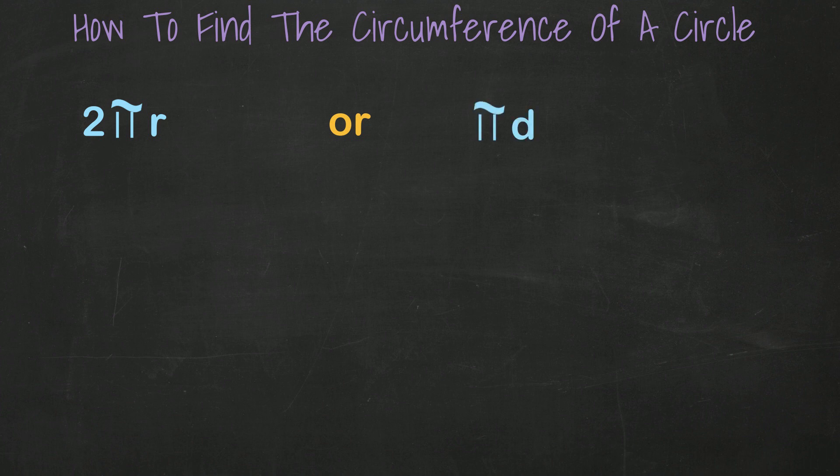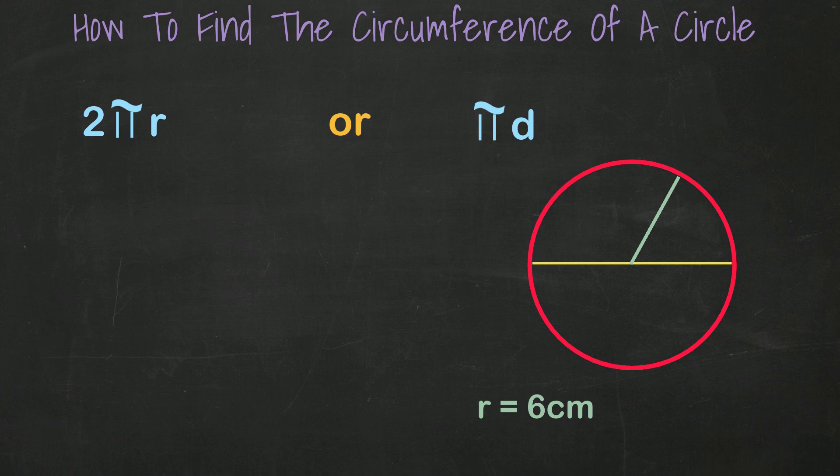Let's walk through a couple of examples. Find the circumference of a circle with the radius of 6 centimeters, diameter of 12 centimeters.